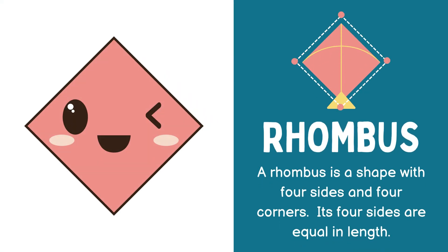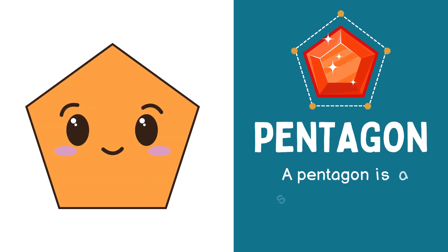Next shape, rhombus. A rhombus is a shape with 4 sides and 4 corners. Its 4 sides are equal in length. Next shape, pentagon. A pentagon is a shape with 5 sides and 5 corners.